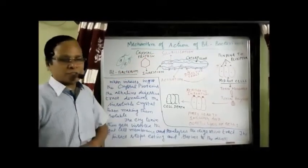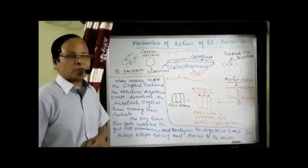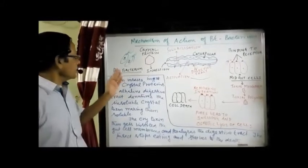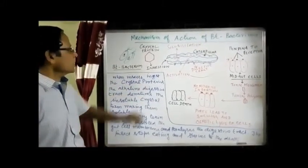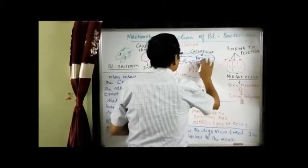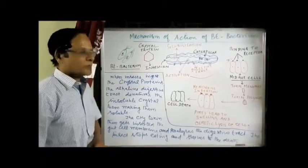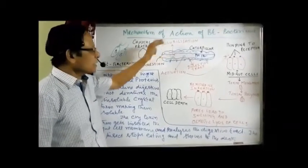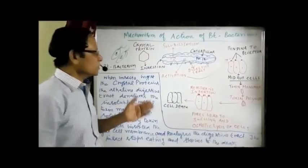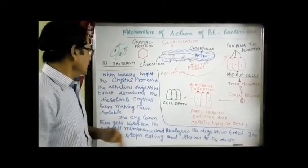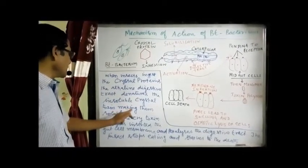The mechanism of action of Bt bacterium — how it kills the larvae, the caterpillar of an insect of the mentioned orders. The Bt bacterium produces a crystal protein which is insoluble. When insects ingest the crystal proteins, the available pH in the gut is 12 — a strongly alkaline pH. The alkaline digestive tract causes solubilization, converting the crystal toxin from insoluble to soluble form — this is called solubilization, or denaturation of the crystals.